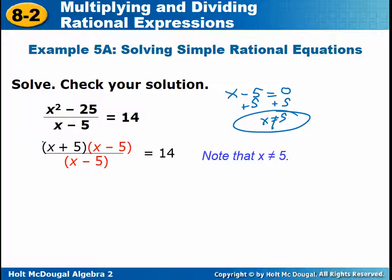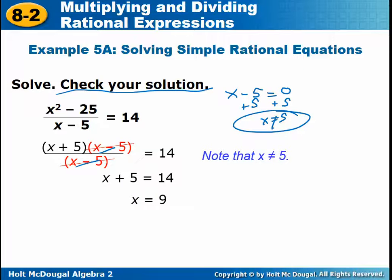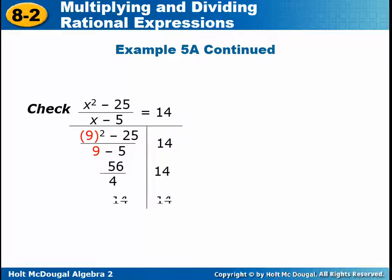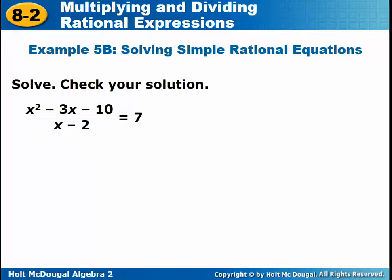Now factor the top: X squared minus 25 is a difference of squares, so it's (X plus 5)(X minus 5). We have the same factor on top and bottom, so cancel X minus 5. We're left with the simple equation X plus 5 equals 14, giving X equals 9. Check: plug 9 into the original — 9 squared minus 25 over 9 minus 5 is 56 over 4, which equals 14. That matches the right side, so X equals 9 is the solution.